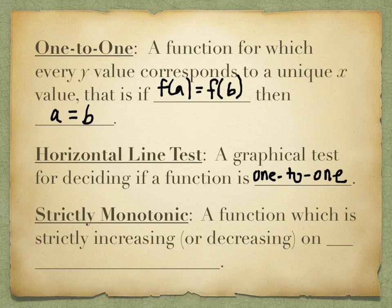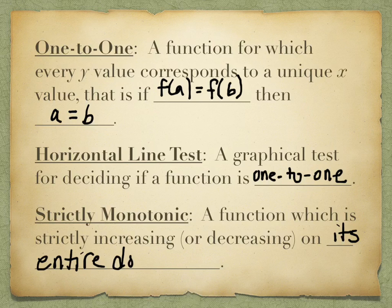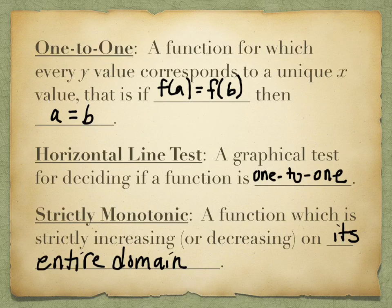Strictly monotonic — this is a function which is strictly increasing or decreasing on its entire domain. In other words, it doesn't have portions where it increases and portions where it decreases, and it doesn't have any flat spaces or constant spots on the graph. Just like brother and sister have the more generic term siblings, monotonic is a neutral word describing that it's either decreasing or increasing.